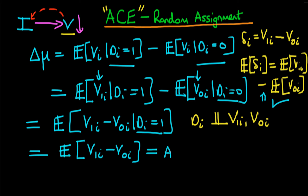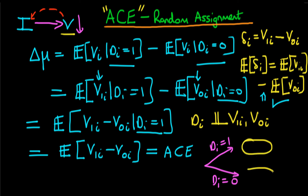In the circumstance where we have random assignment, the simple difference in means between the two groups actually tells us the average causal effect of the treatment. Random assignment means some states are allocated DI equal to 1, chosen randomly, and some states have DI equal to 0. Essentially the average causal effect in the group which were treated is exactly the same as the average causal effect of the two groups combined.